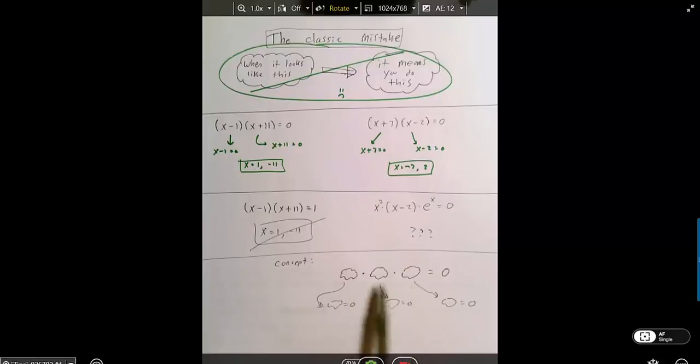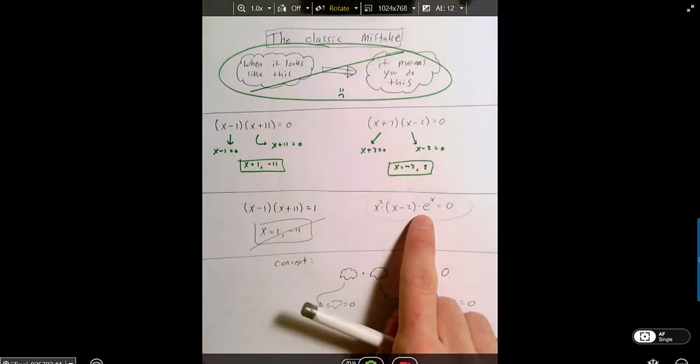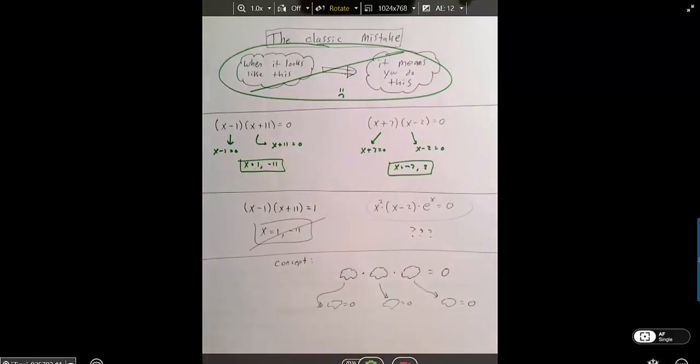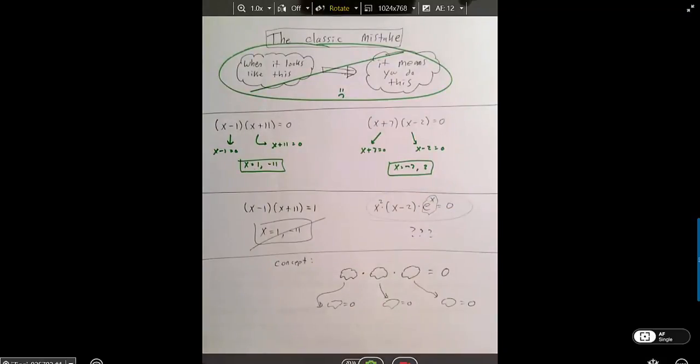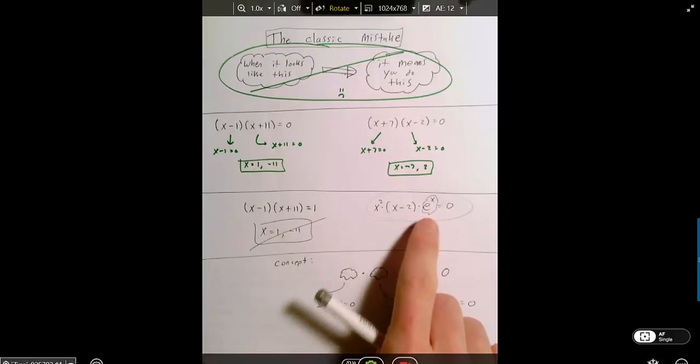when you have any number of things being multiplied that end up as zero, you know that at least one of them has to be zero, because that's the only way the entire product can be zero. That's the thing that lets you split it up into separate pieces. That's why this is really the same underlying concept, even though it's got an e to the x, and you'd never seen that in a problem before.